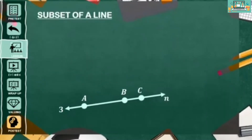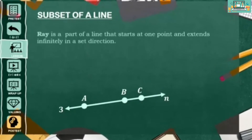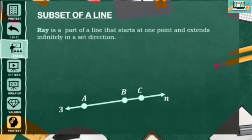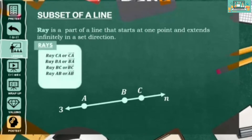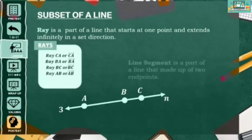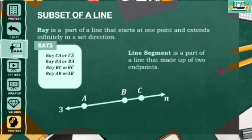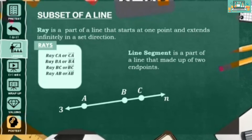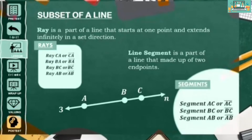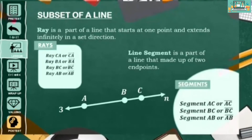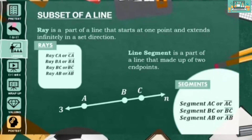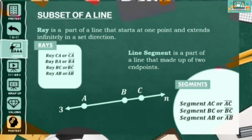There are two known subsets of a line. First, the ray. The ray is a part of a line that starts at a point and extends infinitely in a set direction. The rays on our line are ray CA, ray BA, ray BC, and ray AB. Another part of a line is a line segment. It is a part of a line made up of two endpoints, such as segment AC, segment BC, and segment AB.